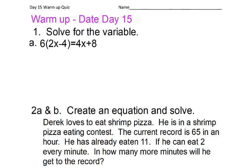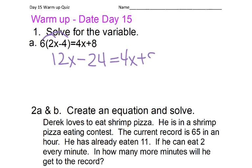What you should have done on this — there are two ways we could do this, but I'll show probably the one you did. So 6 times 2 would give us 12x, and 6 times negative 4 would give you negative 24, equals 4x plus 8.